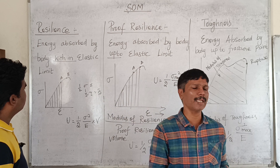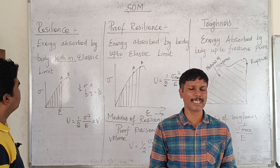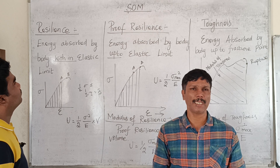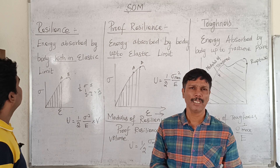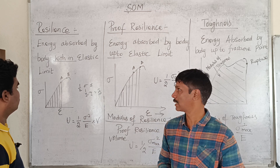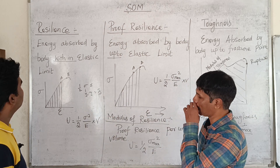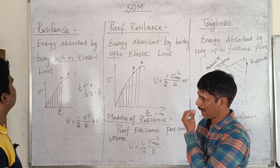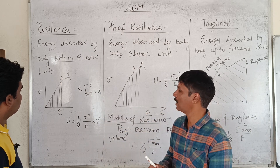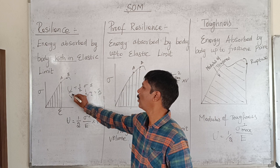The area under the stress-strain curve up to the elastic limit is the modulus of resilience. Modulus of resilience is energy absorbed per unit volume. Resilience equals modulus of resilience into volume — that is the formula. It is energy stored per unit volume.